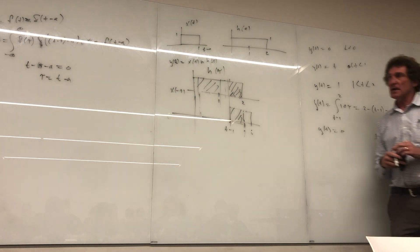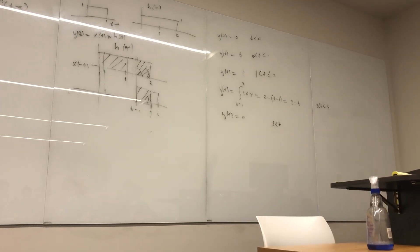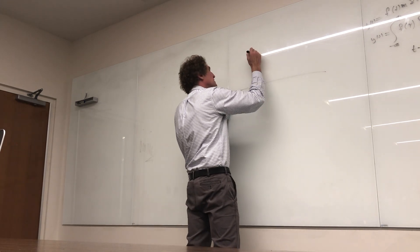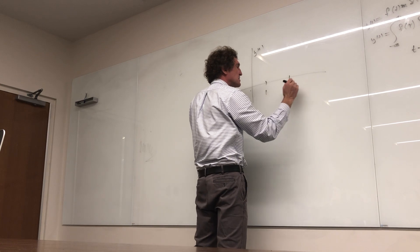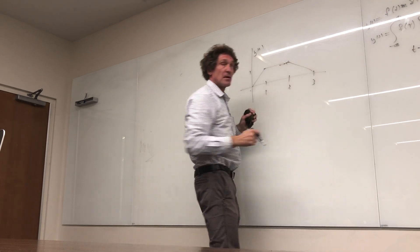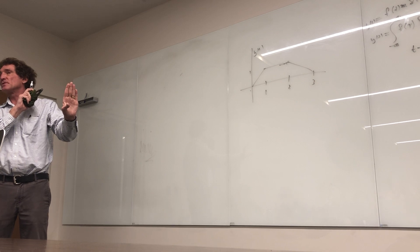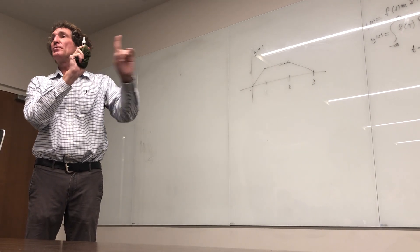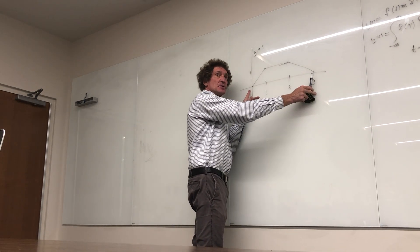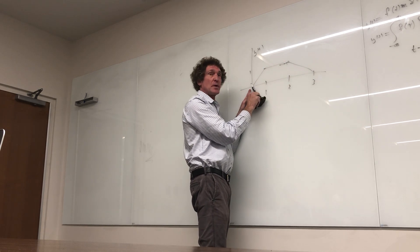When you graph that function — this is something I'll ask on quizzes and tests — the sketch rises linearly from 0 to 1, stays at 1 from t = 1 to t = 2, then falls back to 0 at t = 3. Notice that for any two time-limited functions, the width of the convolution result always equals the sum of the widths of the two functions. Here the widths were 2 and 1, giving a total width of 3.